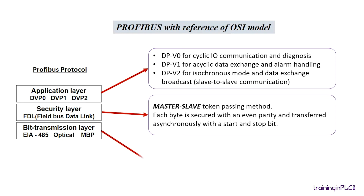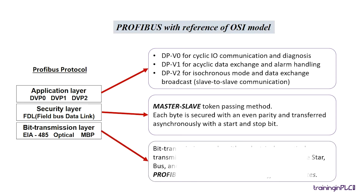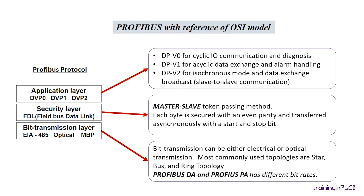Next, the bit transmission layer — here the data can be transmitted either by electrical transmission EIA-485, twisted pair cables, or optical transmission. Most commonly used topologies are star, bus, and ring topology.